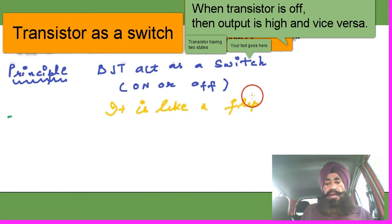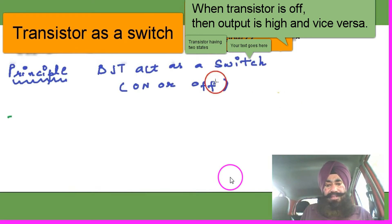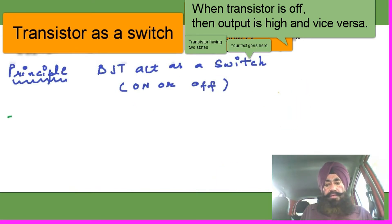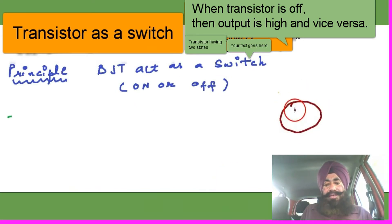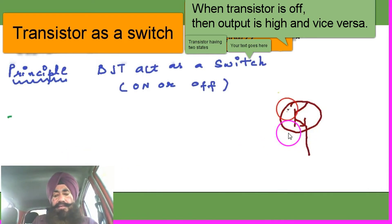It is like a flip-flop having 0 and 1 memory states. Now let's learn about how the transistor acts as a switch.